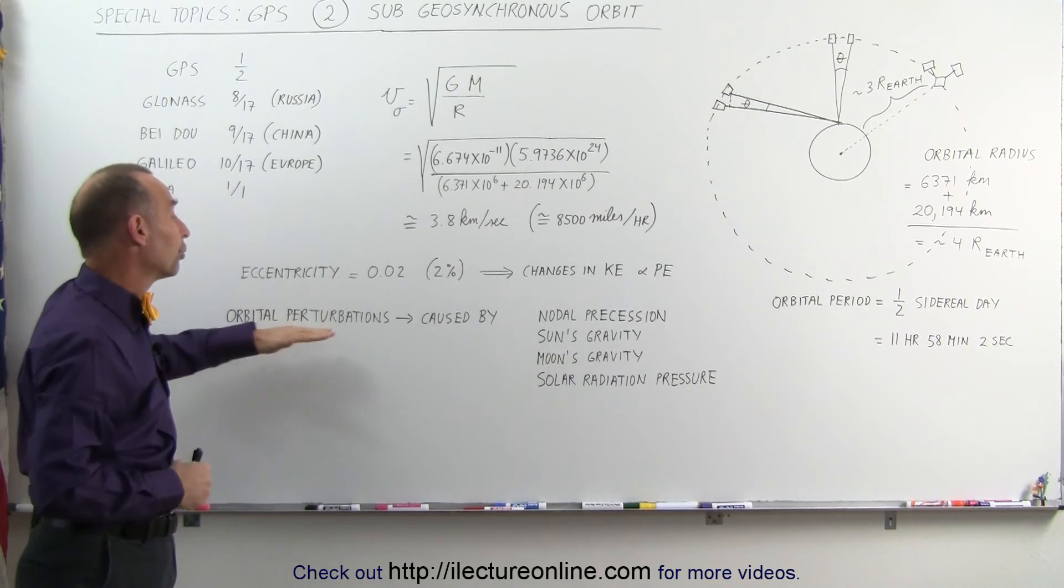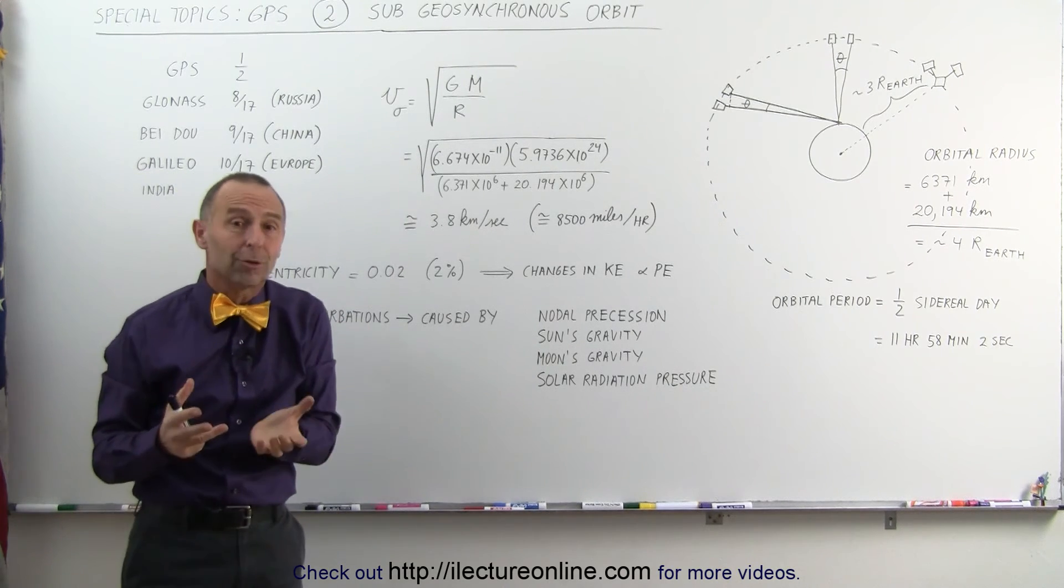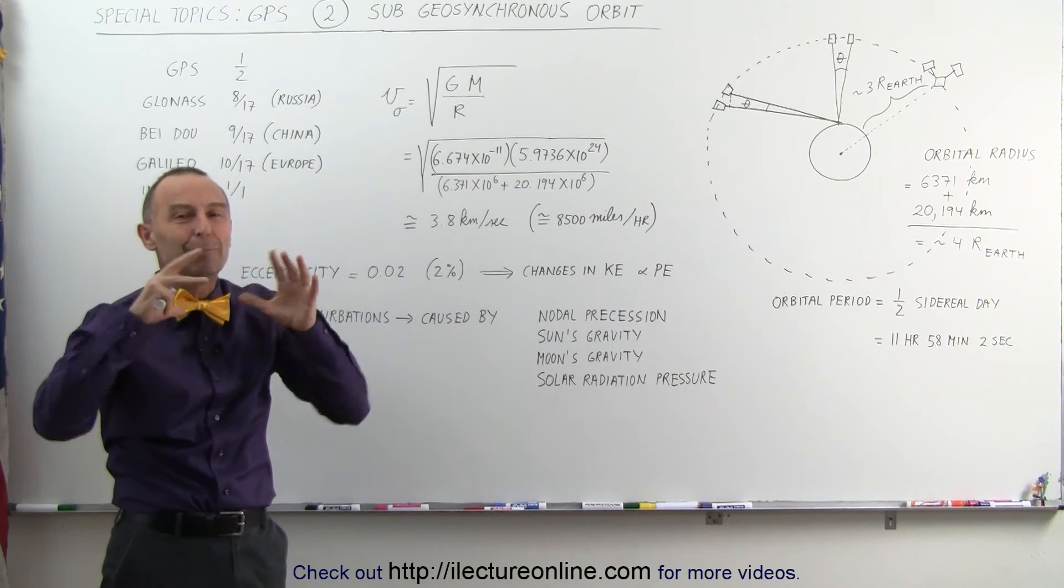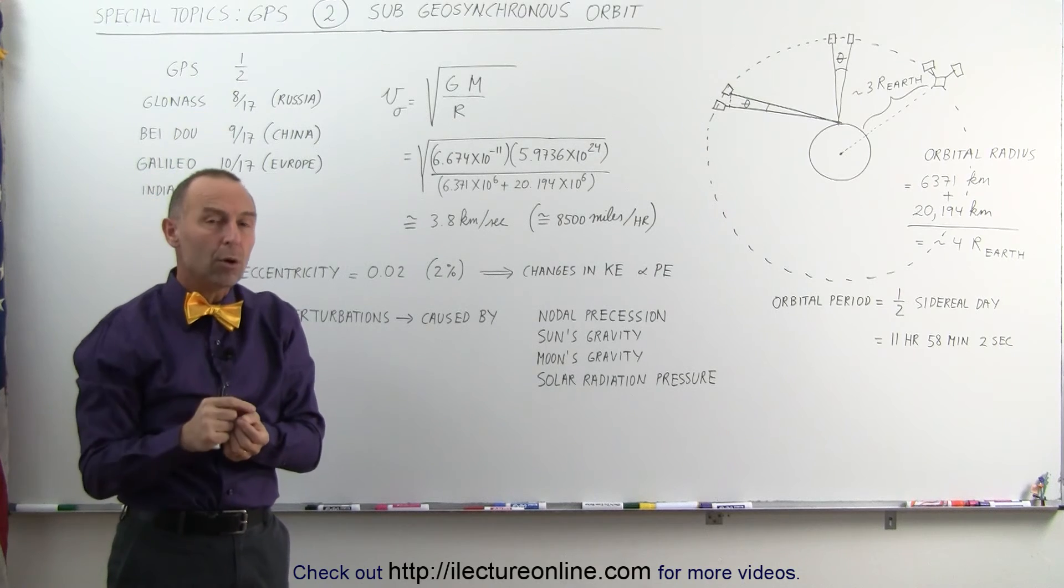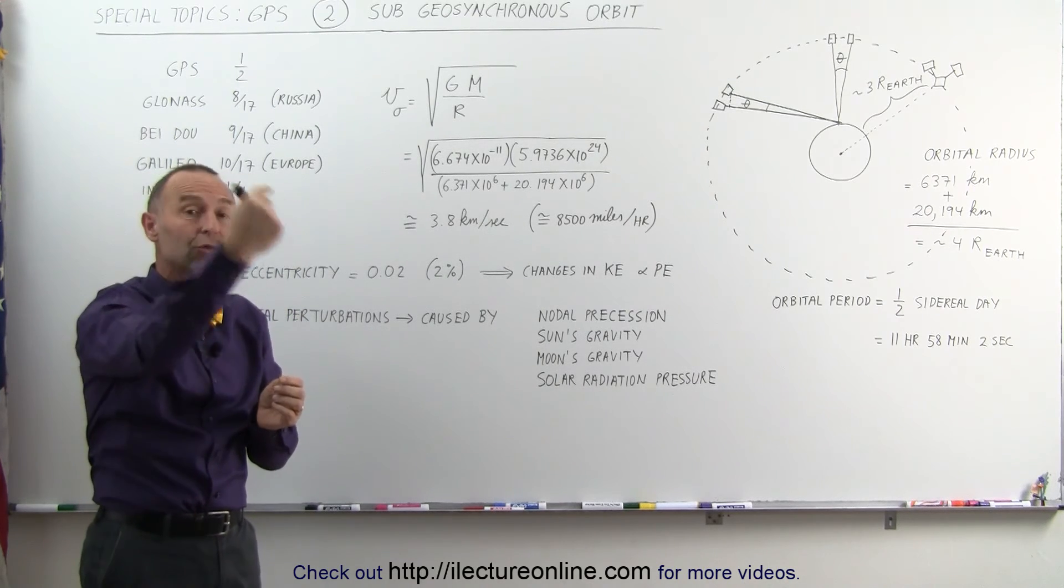It turns out that the Earth is not a complete perfect sphere. It is wider at the equator than it is from pole to pole. Because of that, as the satellites go around, and of course, they don't go around perfectly around the equator.